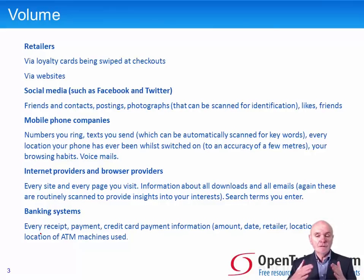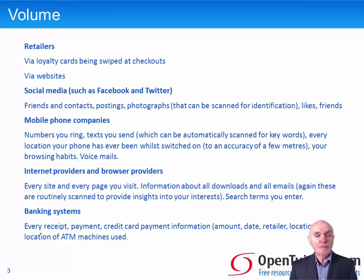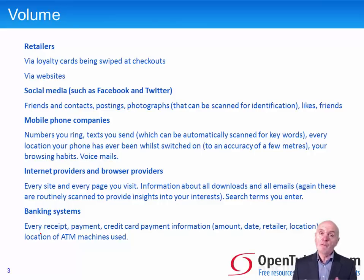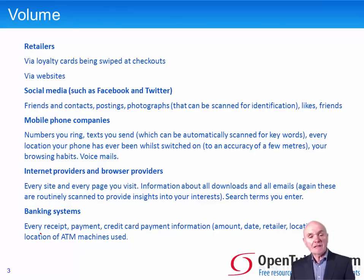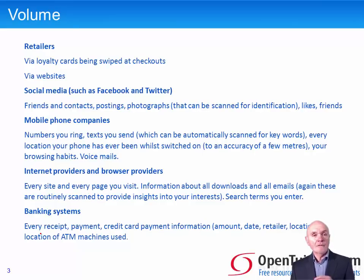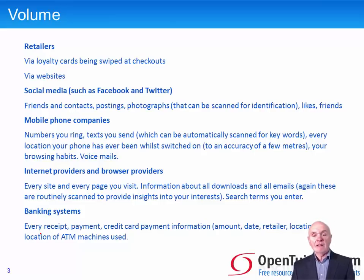It's easy for phone companies to triangulate using a number of different transmitter masts in the vicinity — they can find out, within a few meters, exactly where you are. They can also look at which pages you visit if you use your mobile phone for browsing, and could, if they wanted to, look at your texts and listen to your voicemails. Internet providers and browser providers will have records of every site you visit, every page you look at, every download you've made, and details of to whom you're sending emails.